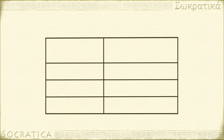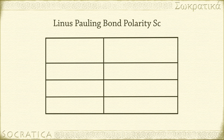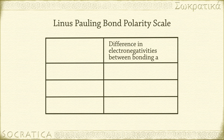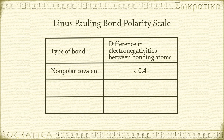Chemists generally measure the polarity of a bond according to a scale established by Linus Pauling. If the relative electronegativities of the two bonded atoms differ by less than 0.4 on the Pauling scale, the bond is considered nonpolar covalent. If the difference in relative electronegativities is between 0.4 and 1.7, we call it a polar covalent bond. And if the electronegativities differ by more than 1.7, it's an ionic bond.